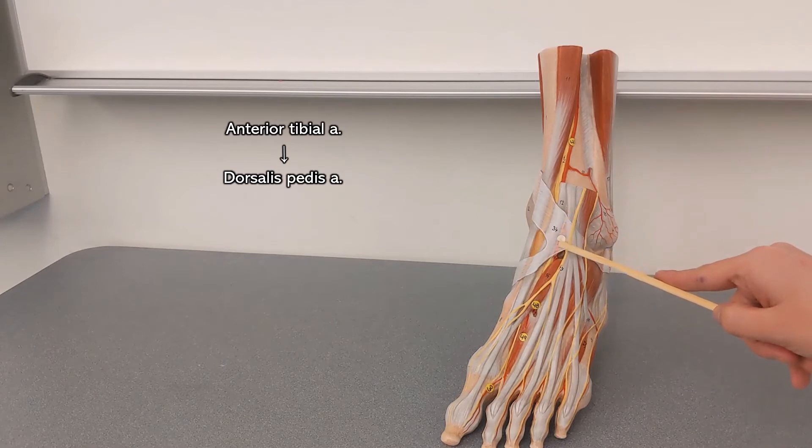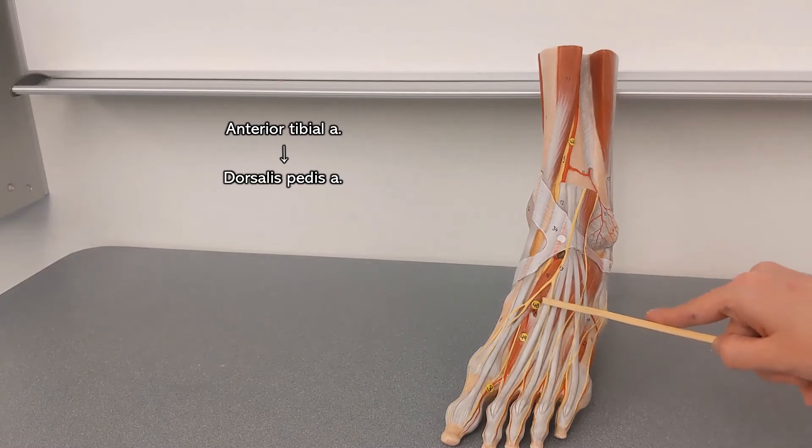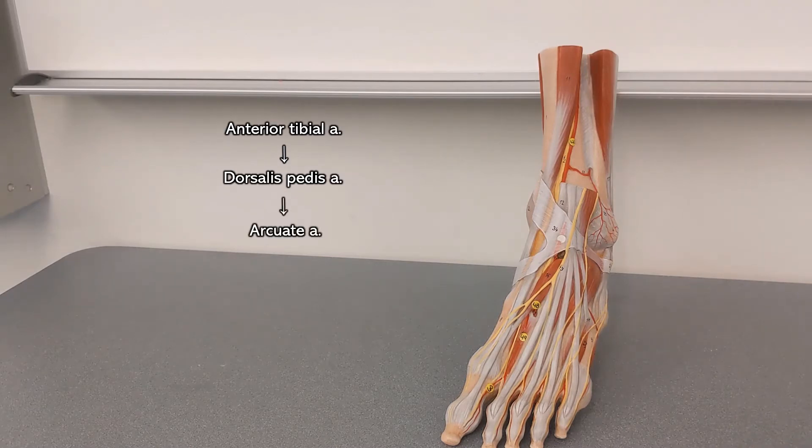The dorsalis pedis artery comes and it makes an arch over the top of your foot. Now we can only see the very first beginning of that arch right there. That is the start of the arcuate artery. The arcuate artery has multiple arteries radiating off of it.